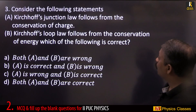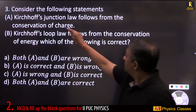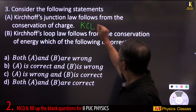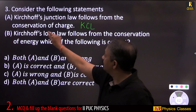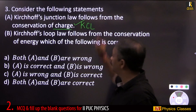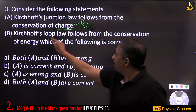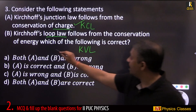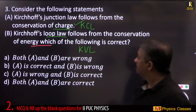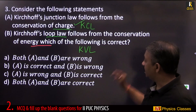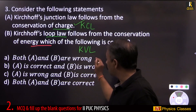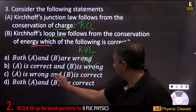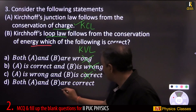Consider the following statements: Kirchhoff's junction law (KCL) follows from the conservation of charge — true. Kirchhoff's loop law (KVL) follows from the conservation of energy — also true. Both statements A and B are correct. Students should note that both Kirchhoff's current law and voltage law are correctly derived from fundamental conservation principles.